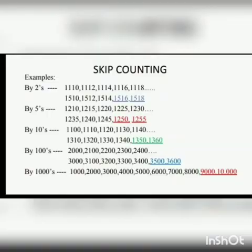More examples here for skip counting. By 2s: 1,110 — 1,112 — 1,114 — 1,116 — 1,118. By 5s: 1,210 — 1,215 — 1,220 — 1,225 — 1,230.